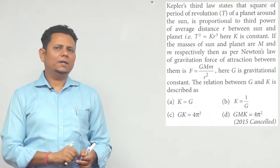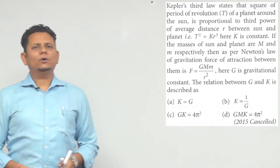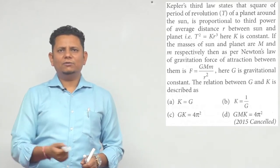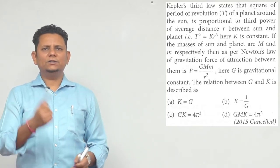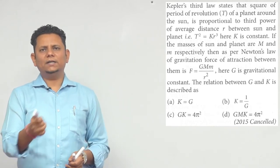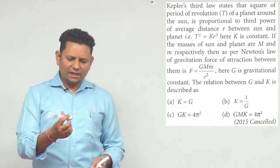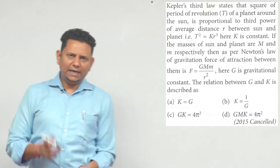Capital G and capital K ke beech kya relation hoga hai, ye aapko batana hai. Char option diye hue hai: K=G, K=1/G, GK=4π², ya GM=4π². Char option hai. Sawal bada simple hai, basics pe jaega.